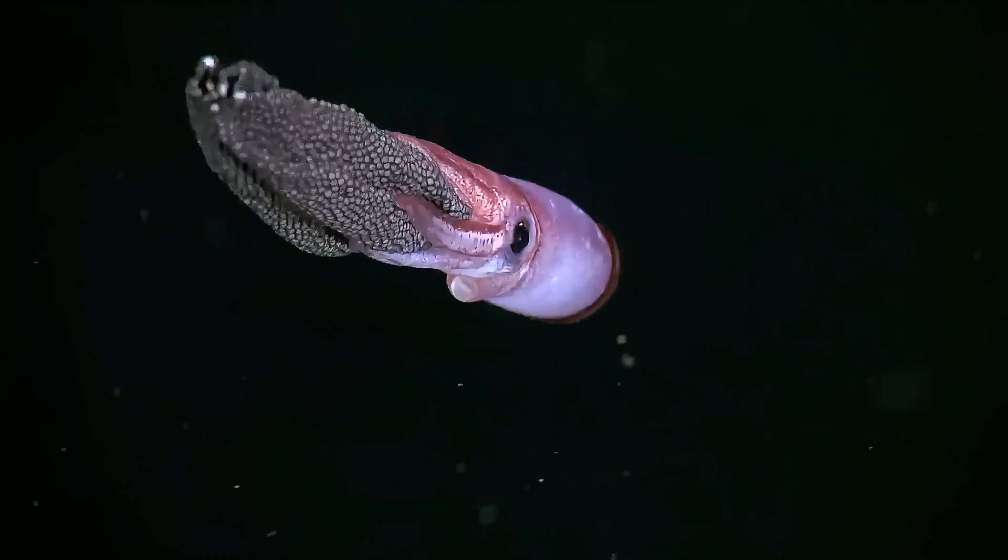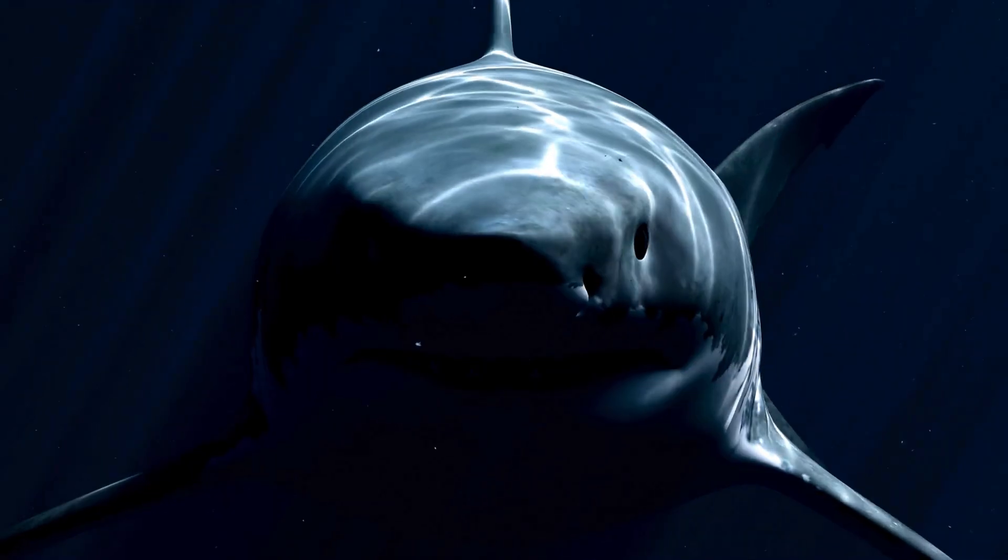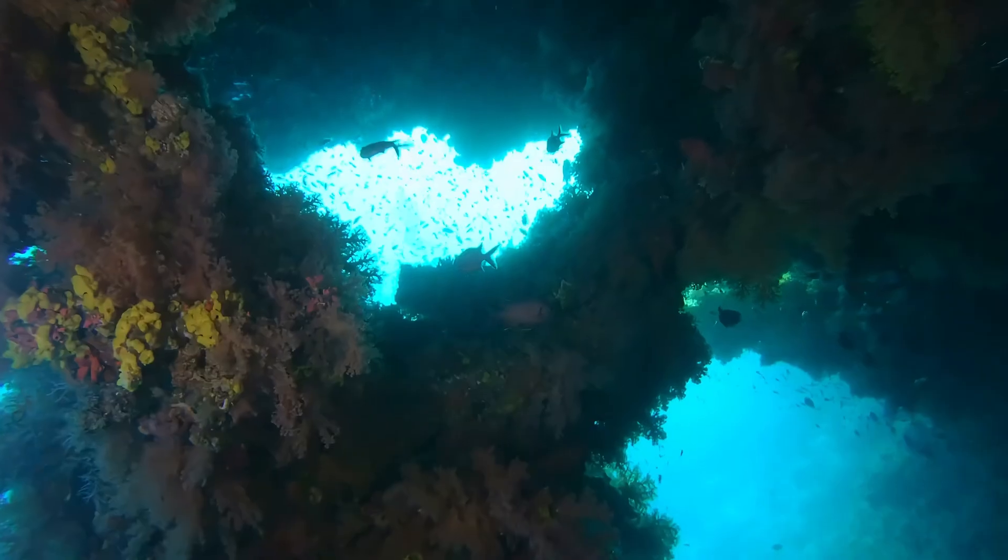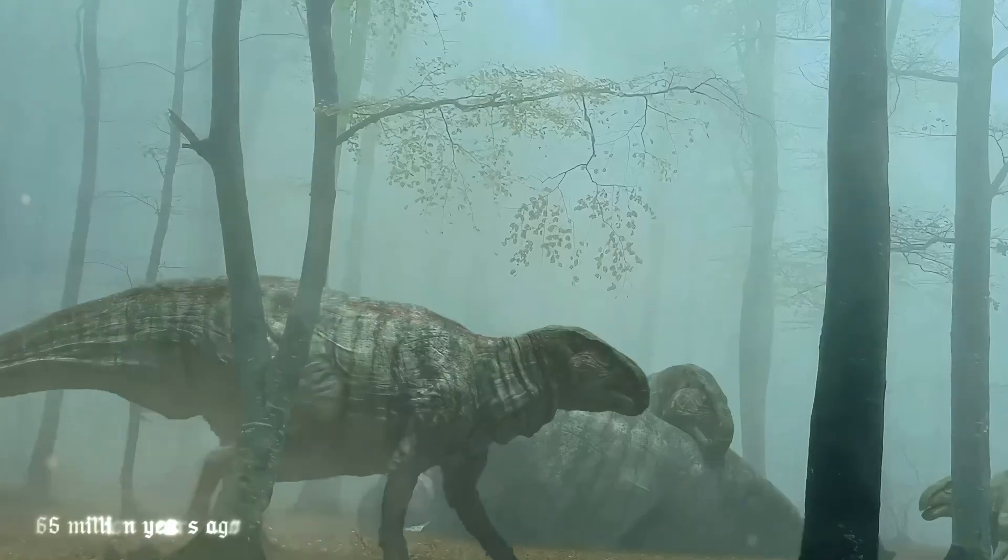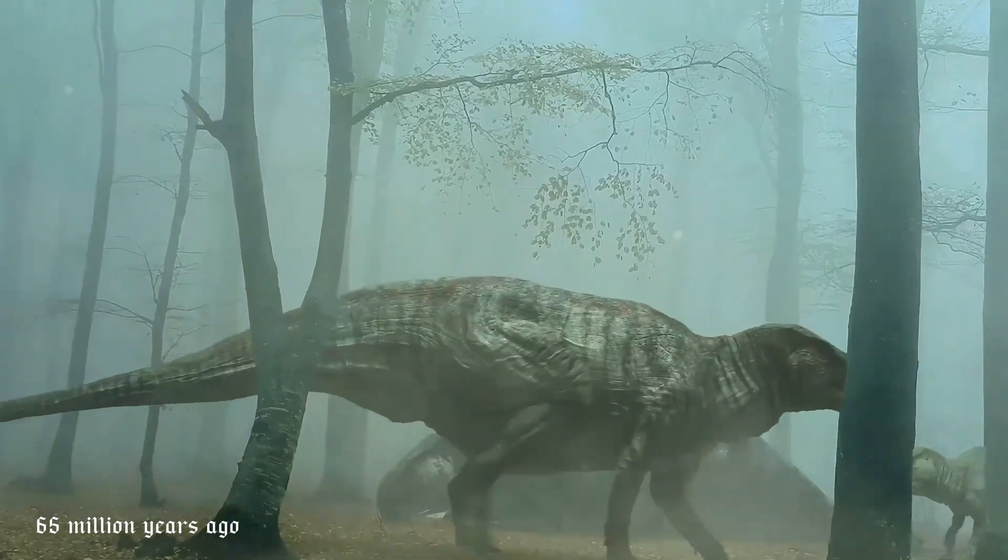As life continued to evolve, multicellular organisms appeared, leading to the rise of plants and animals. The oceans teemed with life, from ancient fish to gigantic marine reptiles, and eventually life ventured onto land.